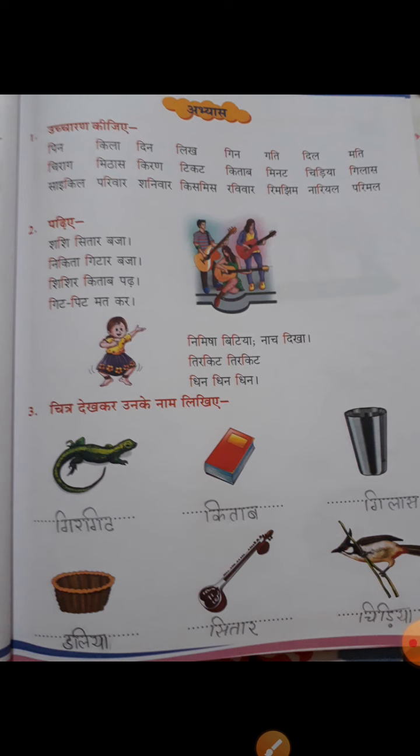There are four-letter words. You will read them: SHASHI, SITAR, NIKITA, GITAR, SHISHIR, KITAB, PADH GIT, PIT, MATKAR.